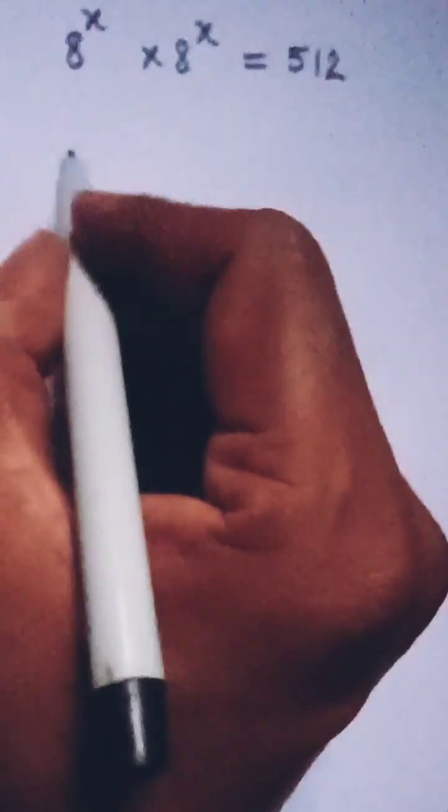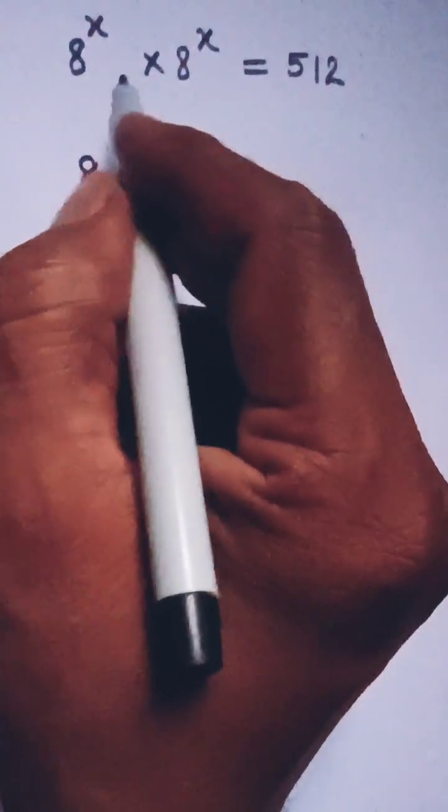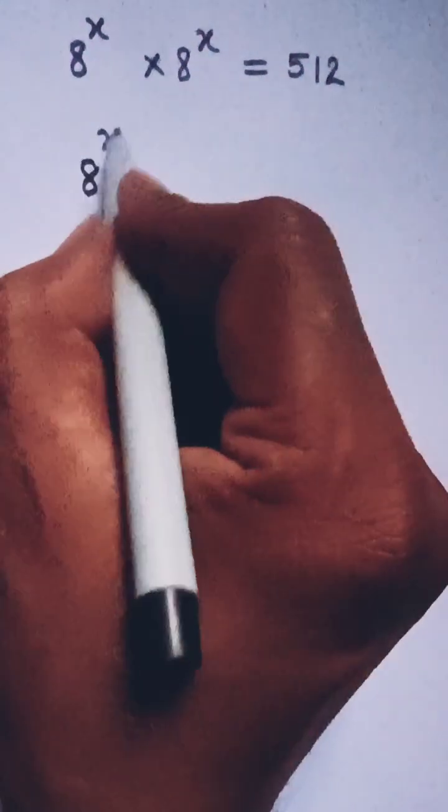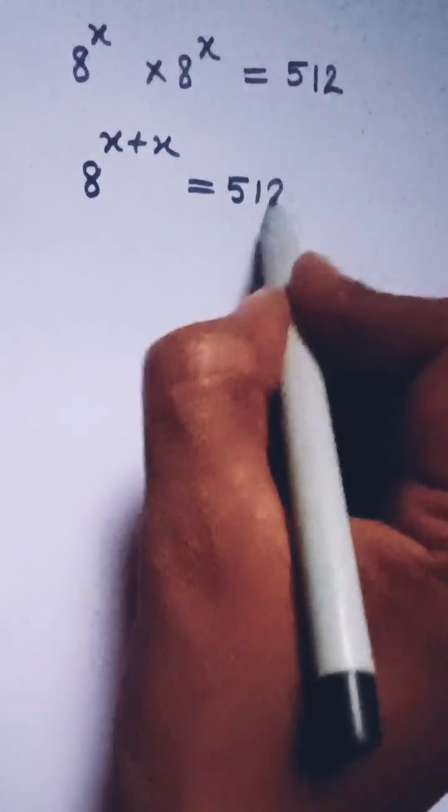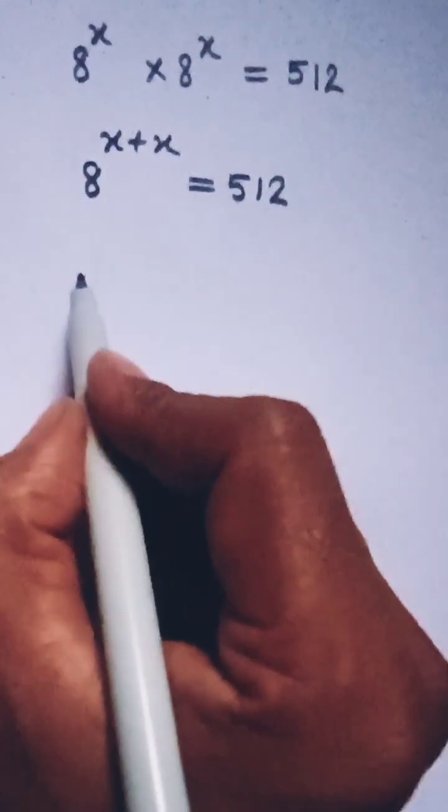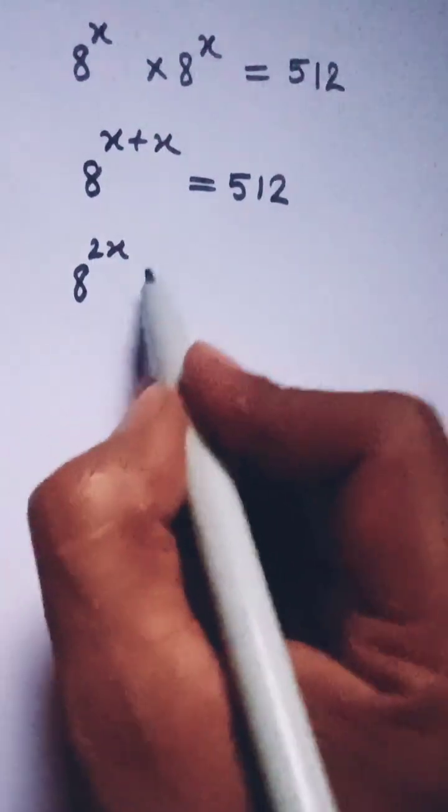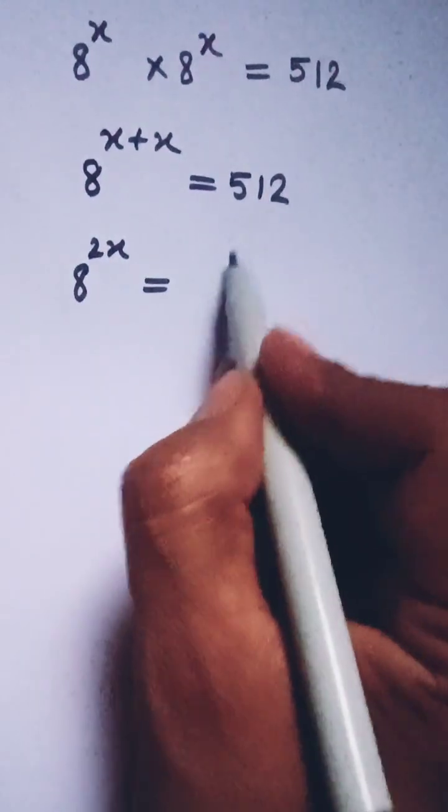Here I can do one thing. The bases are the same, so we can add their powers. So x plus x equals 2x. Then we have 8 to the power 2x equals 512.